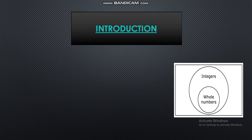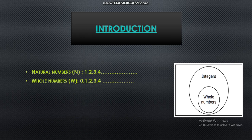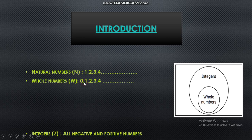In the previous standard we studied some numbers — those are natural numbers. Natural numbers are the numbers starting from 1, 2, 3, 4. The next set of numbers is whole numbers. When 0 is added to the natural numbers, the new set of numbers formed is called whole numbers.